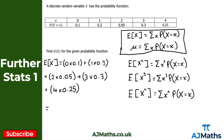Simplifying each term: 0 times 0.1 is 0; 1 times 0.3 is 0.3; 2 times 0.05 is 0.1; 3 times 0.3 is 0.9; and 4 times 0.25 is 1. Adding these up: 0.1 plus 0.9 is 1, plus 1 is 2, plus 0.3 gives 2.3. So the expected value of our random variable x is 2.3 for this first example.